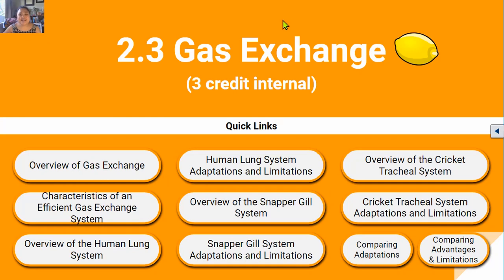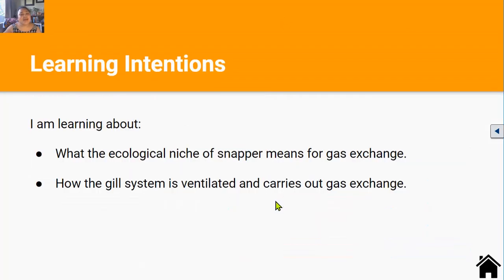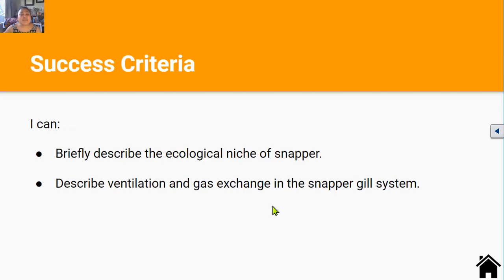Welcome back to the 2.3 gas exchange series. This is video 5. In this video you'll be learning about what the ecological niche of snapper means for gas exchange and how the gill system is ventilated and carries out gas exchange. By the end of this lesson you should be able to briefly describe the ecological niche of snapper and describe ventilation and gas exchange in the snapper gill system.